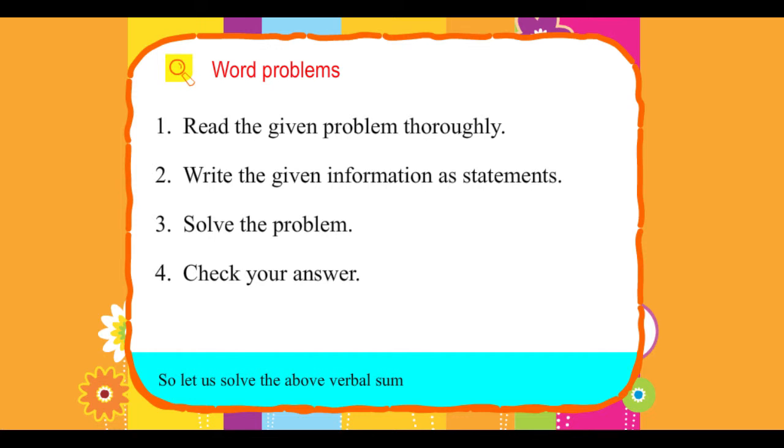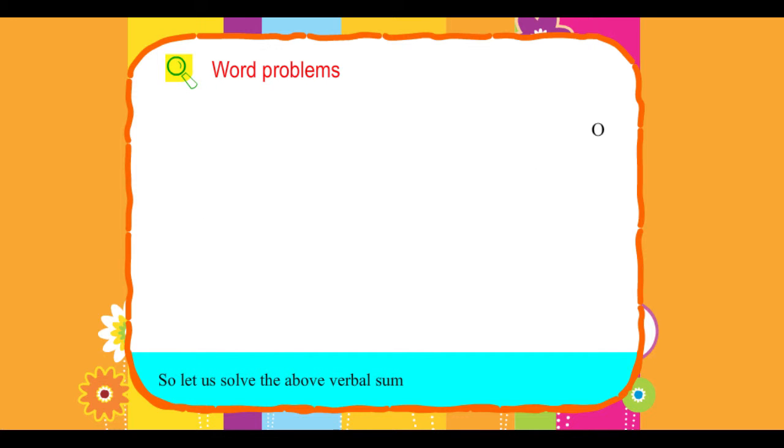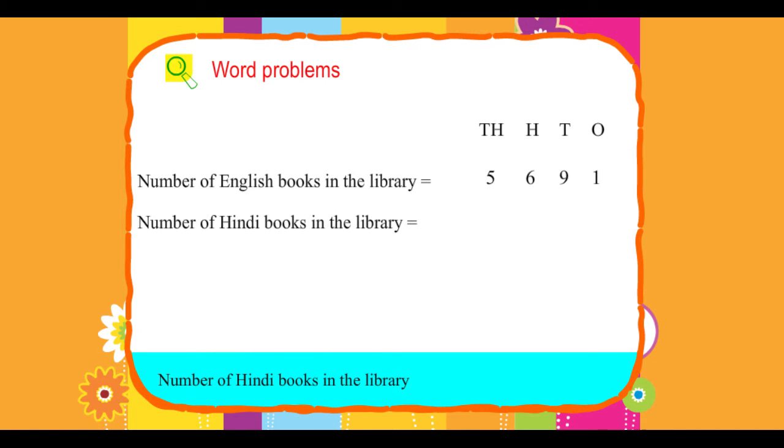So, let us solve the above verbal sum. Number of English books in the library equals 5,691. Number of Hindi books in the library equals plus 3,781.